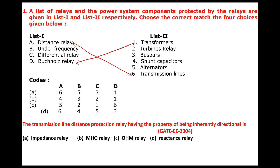Differential relay can be used for transformers, generators, bus bars, and alternators. Under-frequency relay is only used for alternators. Differential relay can also be used for bus bars. Depending upon the other choices, the option boils down to option A, which is the right option. Differential relay can be used for transformers, bus bars, alternators, and motors as well.